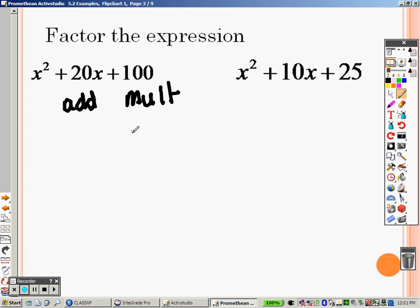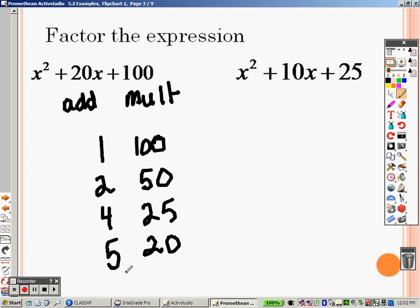Two numbers that multiply to give you 100. Well, that's simple, right? 1 and 100, or I could have 2 and 50, or I could have 4 and 25, I could have 5 and 20, and I could keep doing this over and over again. I could have 10 and 10, and we can keep going and make our list.